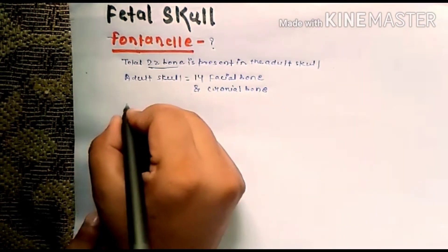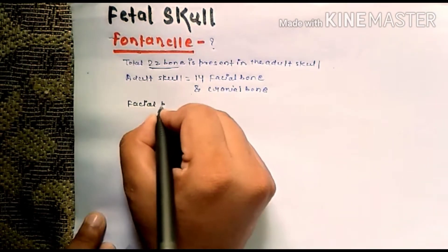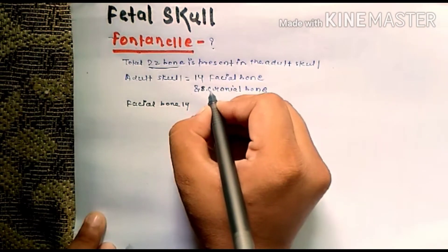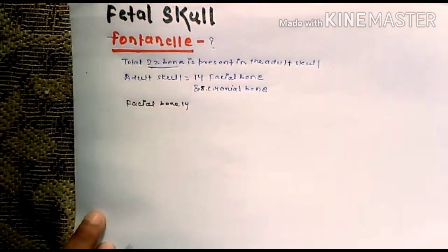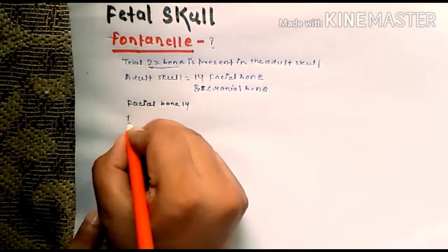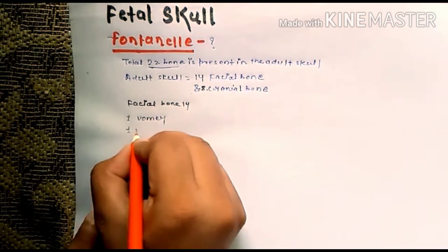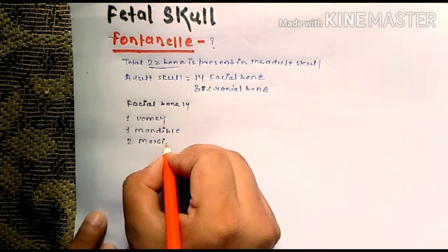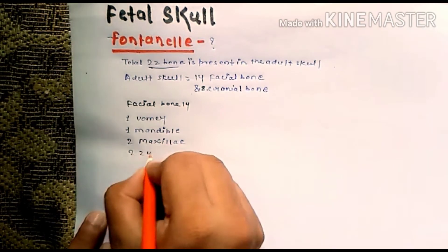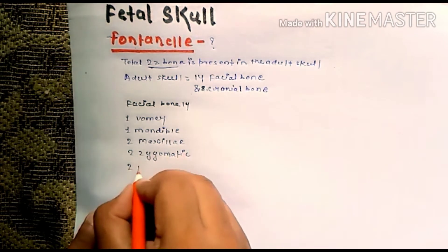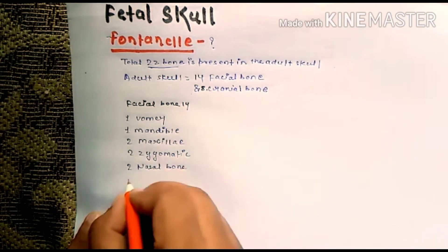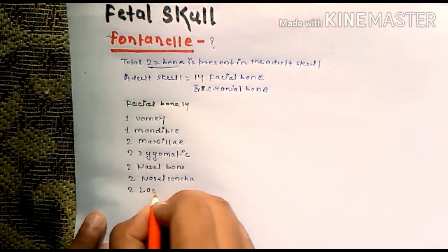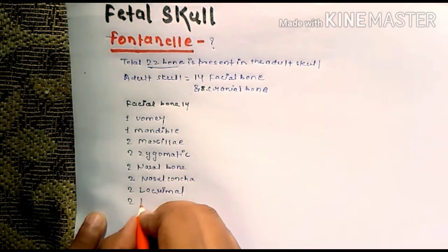If we talk about the facial bones, there are 14 in total: one vomer, one mandible, a paired maxilla, a paired zygomatic, two nasal bones, two nasal conchae, two lacrimal, and two palatine bones.